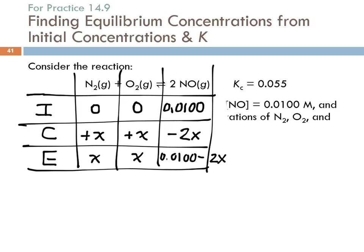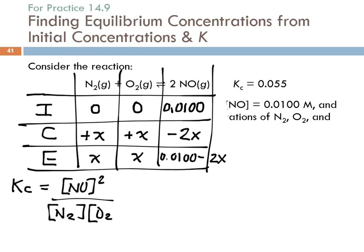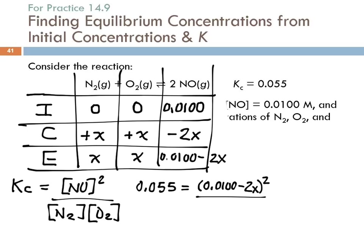Our equilibrium expression is: Kc = [NO]² / ([N₂][O₂]). Plugging in the equilibrium expressions: Kc = (0.0100 − 2X)² / (X · X) = (0.0100 − 2X)² / X².